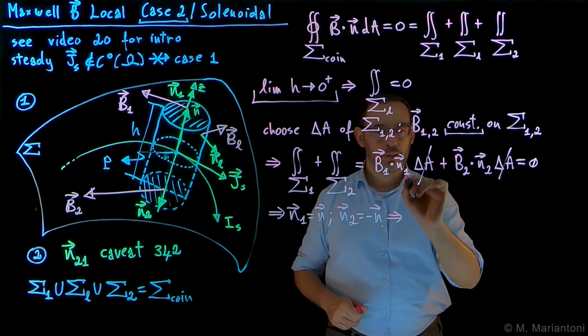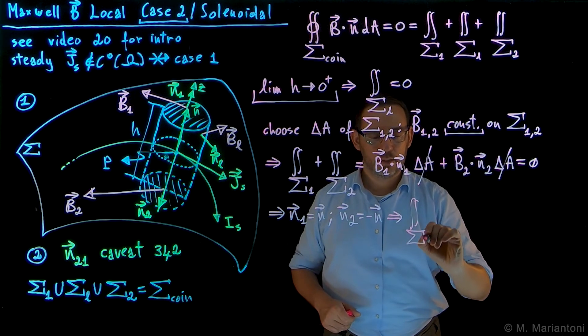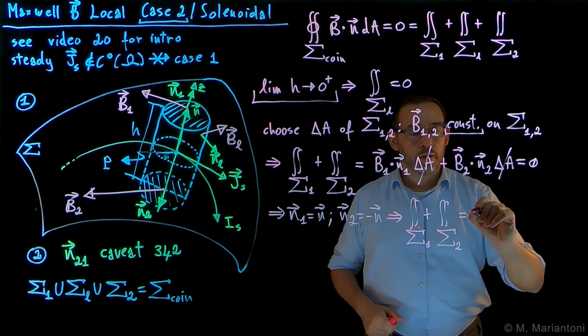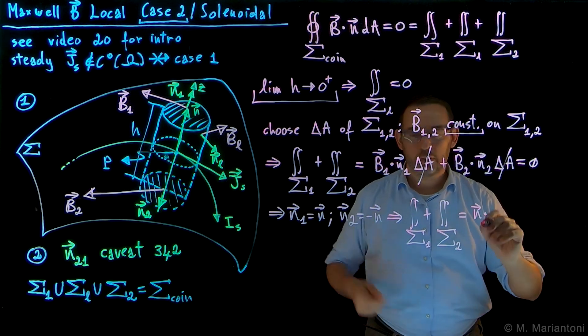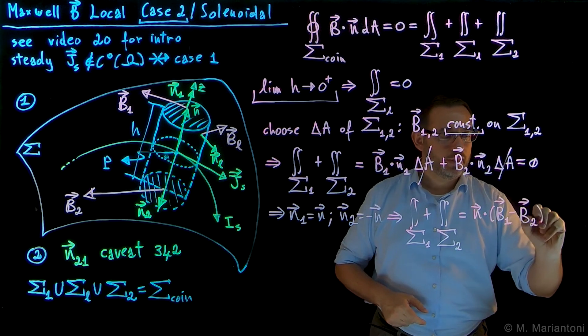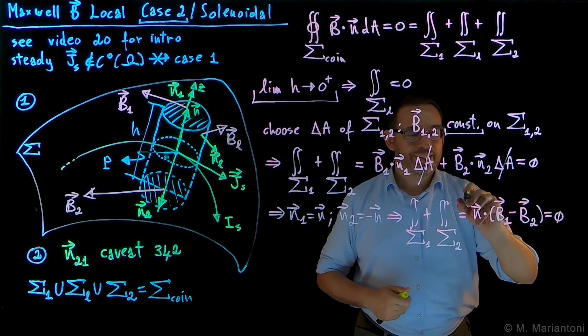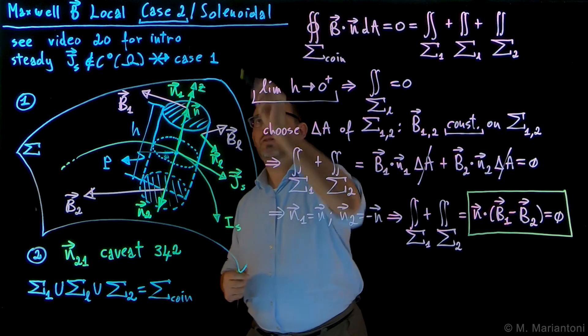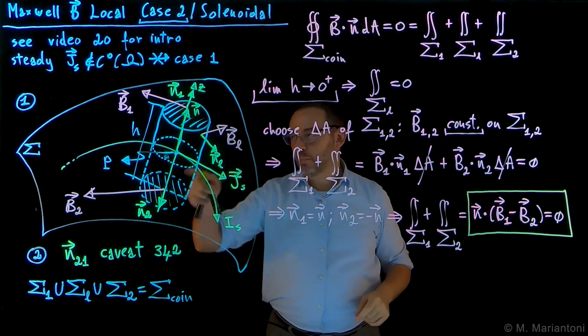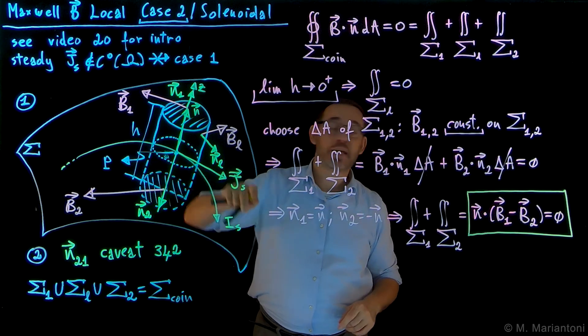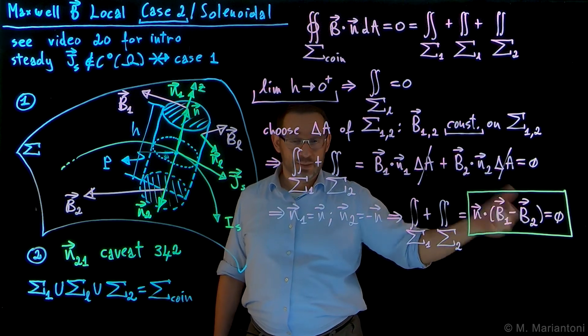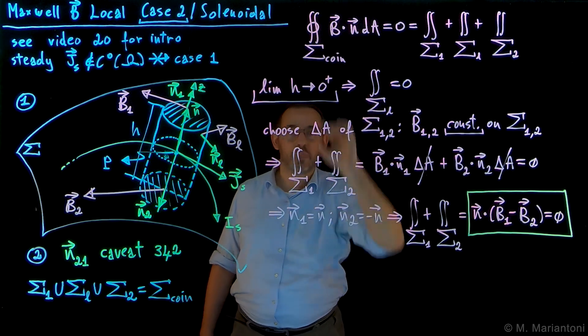So under this condition, finally, we obtain that this integral here, the integral on capital sigma 1 plus the integral on capital sigma 2, which is the only two terms we're interested in, left over from this limit, is going to be, we can factor out n, so n1 is n, dot it, is commutative, B1. n2 is minus n, so minus B2, equal to 0. In this case, this is our case 2, local form for B, in the case of the solenoidal property. This means that the normal components of the magnetostatic field B are continuous in proximity of any point P on this surface capital sigma, where there is a current density J_S on the surface. And remember that in the case of the electrostatic field, the normal components are discontinuous because of Gauss's theorem. They would be sigma by epsilon 0 here. In this case, it's not because this is a solenoidal field, so it comes from exactly this equation up here, from this Maxwell equation.